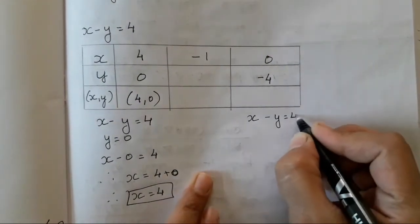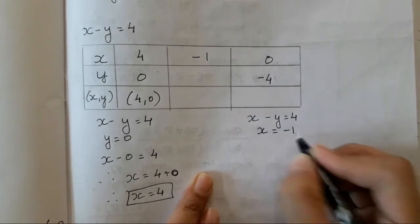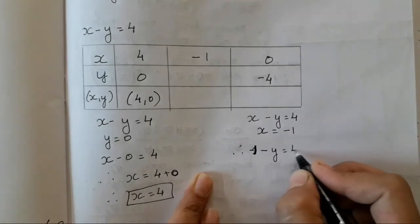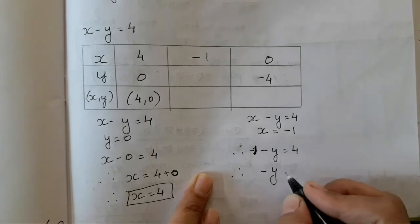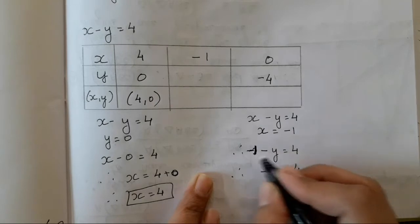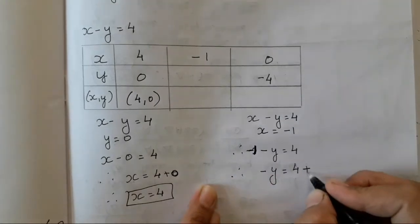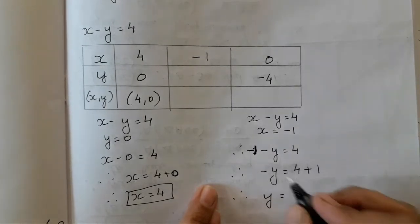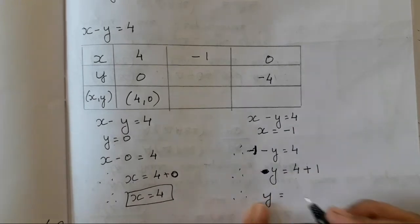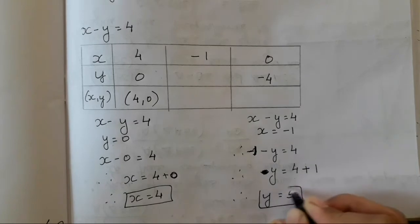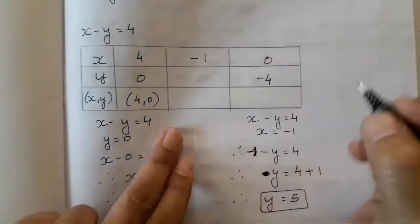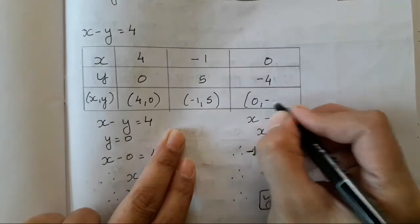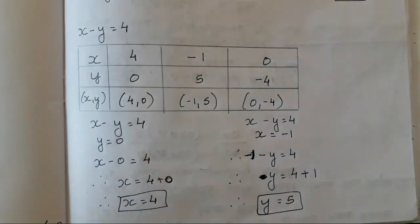The next entry uses x minus y is equal to 4, this time x is minus 1. Substituting: minus 1 minus y is equal to 4, therefore minus y is equal to 4 plus 1. When it moves to the other side it changes sign, therefore y is equal to minus 5. So the pair is (−1, −5). We have to write the x and y form.